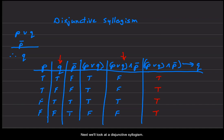Next we'll look at a disjunctive syllogism. Here we have P or Q and not P, therefore Q.